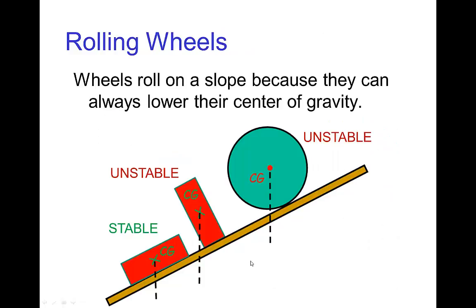This concept lets us understand why wheels roll down a slope. A brick might first be unstable but then it tips over and when it's lying on its side it's stable. But for a wheel, it's always unstable. It turns and lowers its center of gravity and it just keeps turning and turning and continues to lower its center of gravity when it rolls down a ramp.